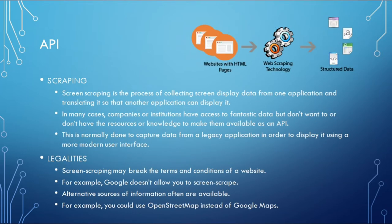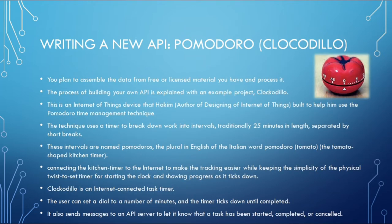If you want your Internet of Thing to connect to the internet, you need to use a web service provided by an Application Programming Interface (API). An API is a way of accessing a service targeted at machines rather than people. Sometimes the data you want is already available on the internet but not in a compatible format — here you can use multiple APIs. There are two concerns related to APIs: scraping and legalities. Scraping is the process of collecting screen display data from one application and translating it for another. Such screen scraping may break the terms and conditions of a website. If you don't want to use pre-existing APIs, you can write a new API for your IoT device.